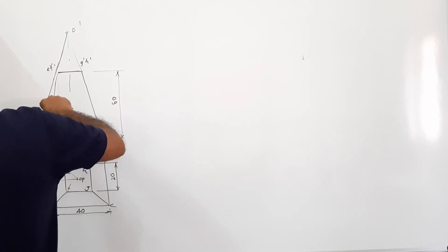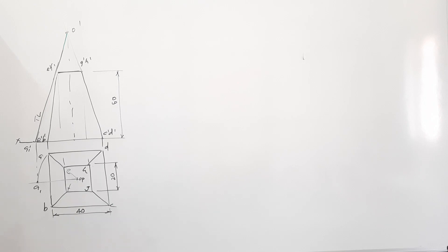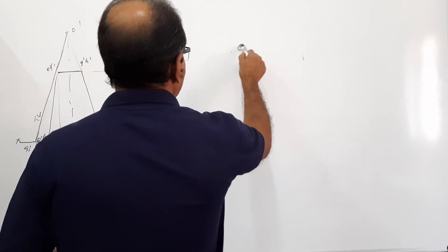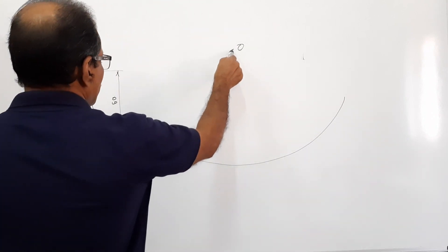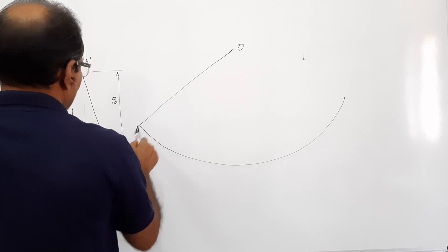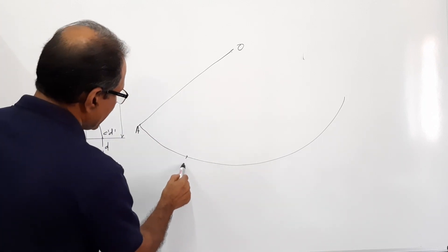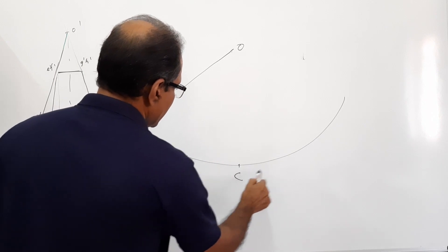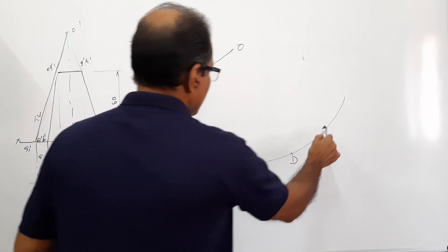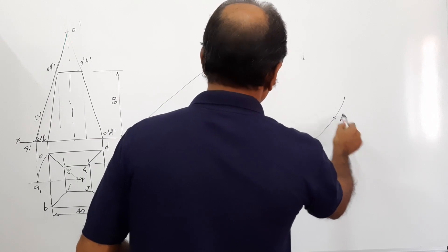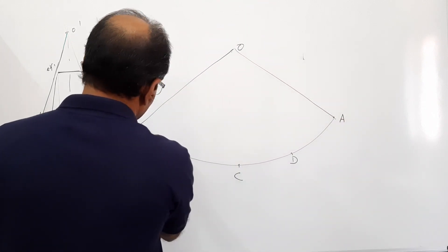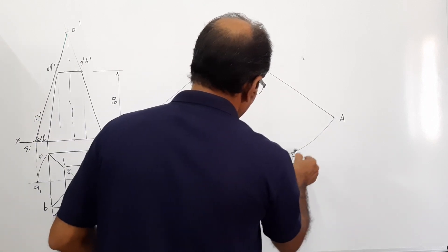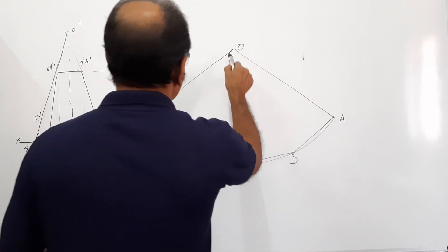Now take that true length, choose O anywhere and draw an arc. Take the starting point A, take the distance AB and cut B, C, D, A. Connect A to B, B to C, C to D, and D to A.